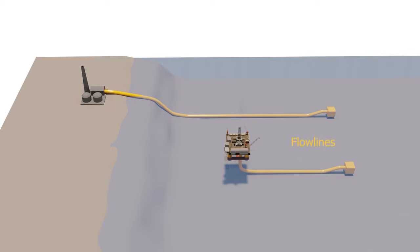This is a wellhead where oil or gas comes out from the ground. The pipelines that transport the oil or gas to the processing facilities onshore or offshore are flow lines, also known as production pipelines or infield pipelines.